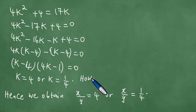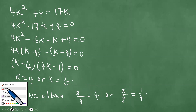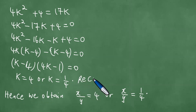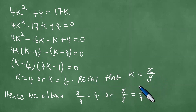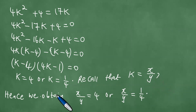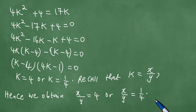Recall that k is exactly x over y. Hence, we obtain that the values of x over y are: x over y equals 4, or x over y equals 1 quarter. And we've solved this problem, and we are done.